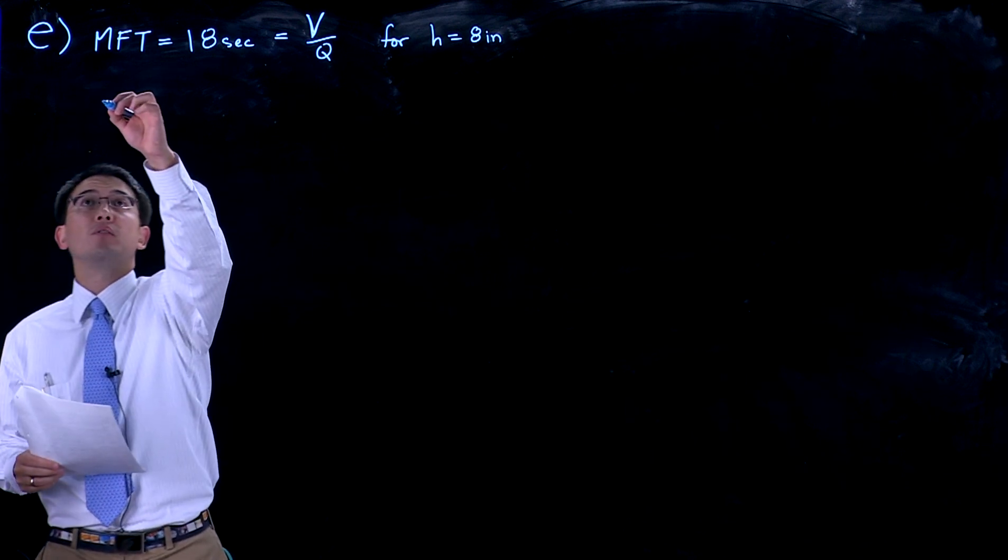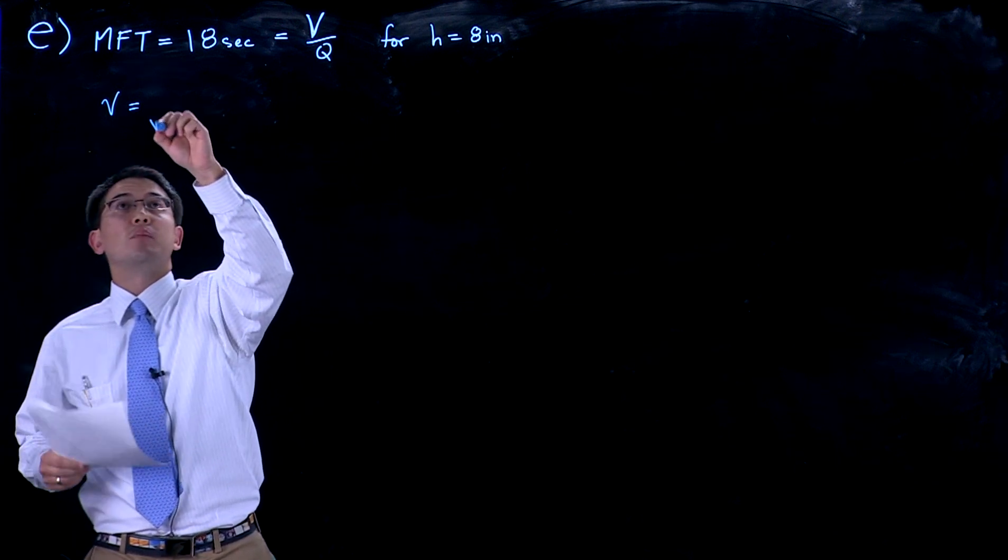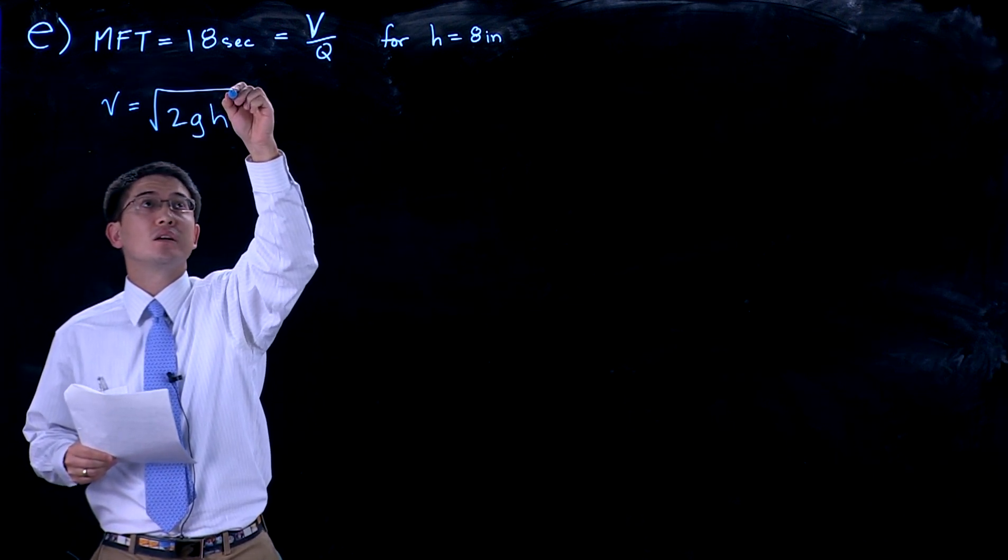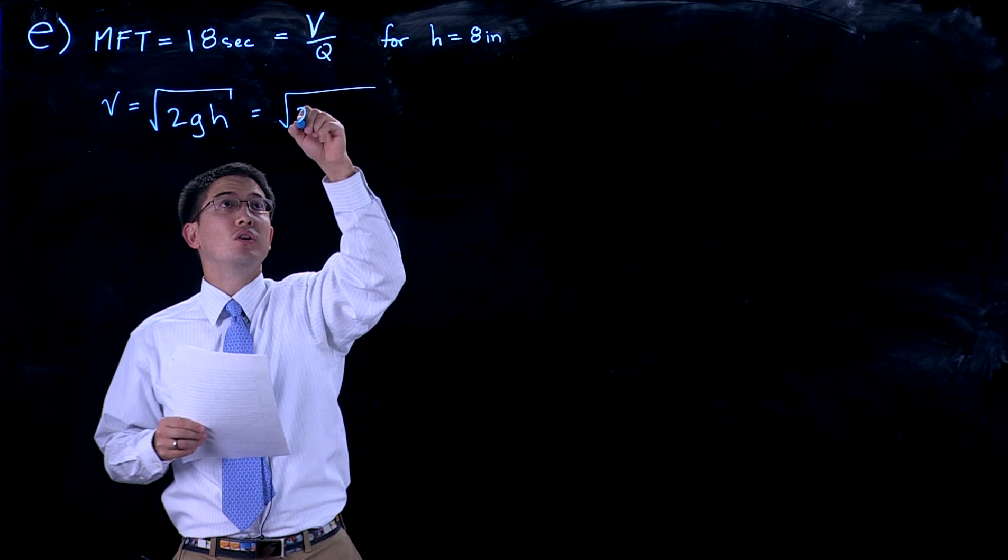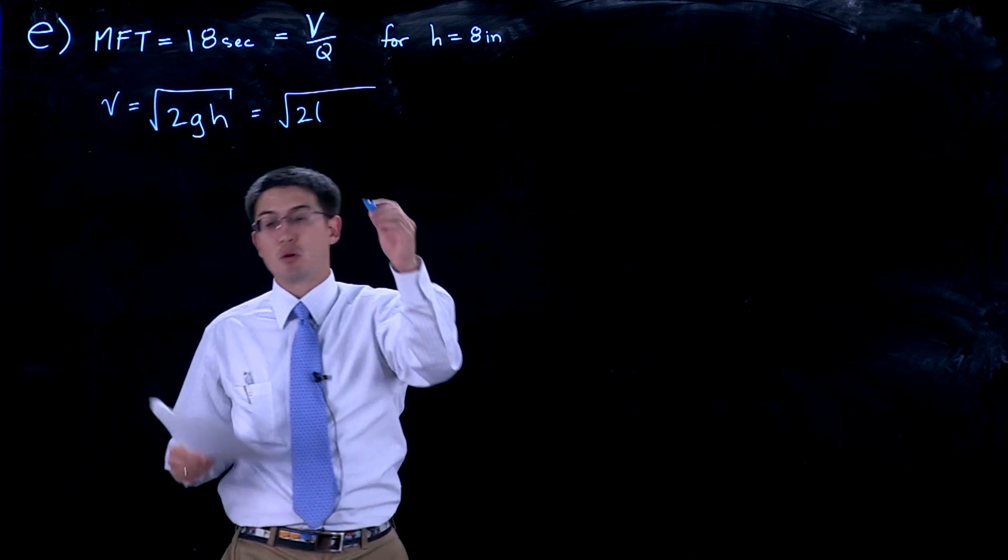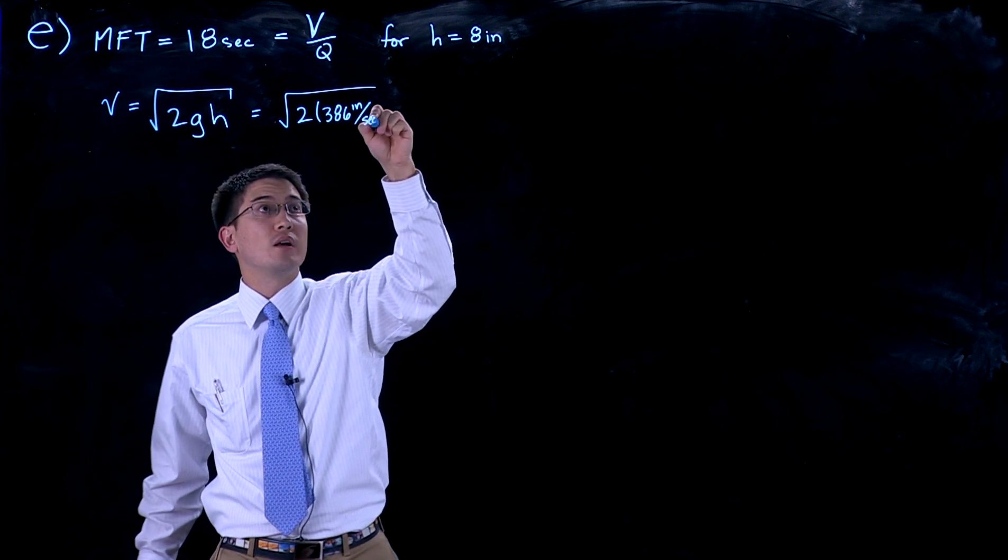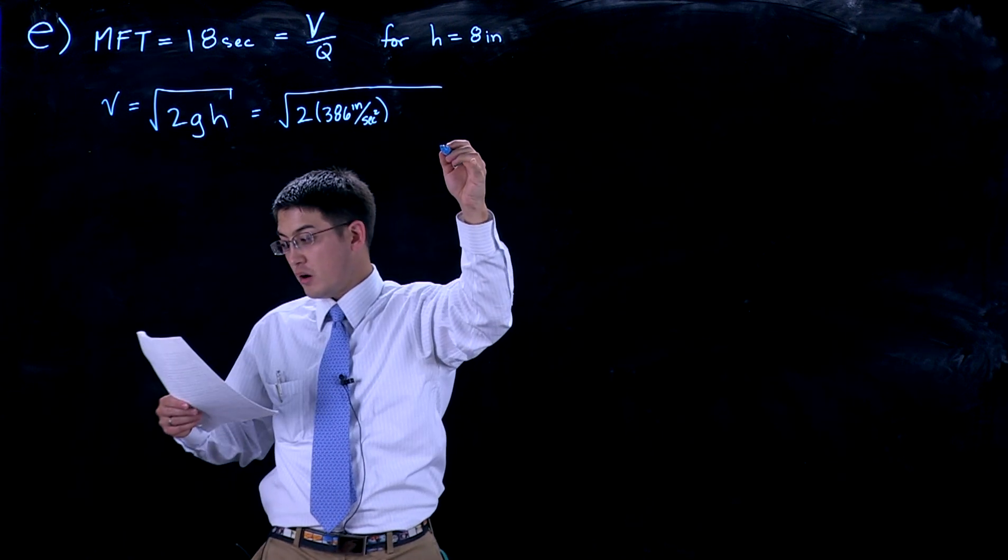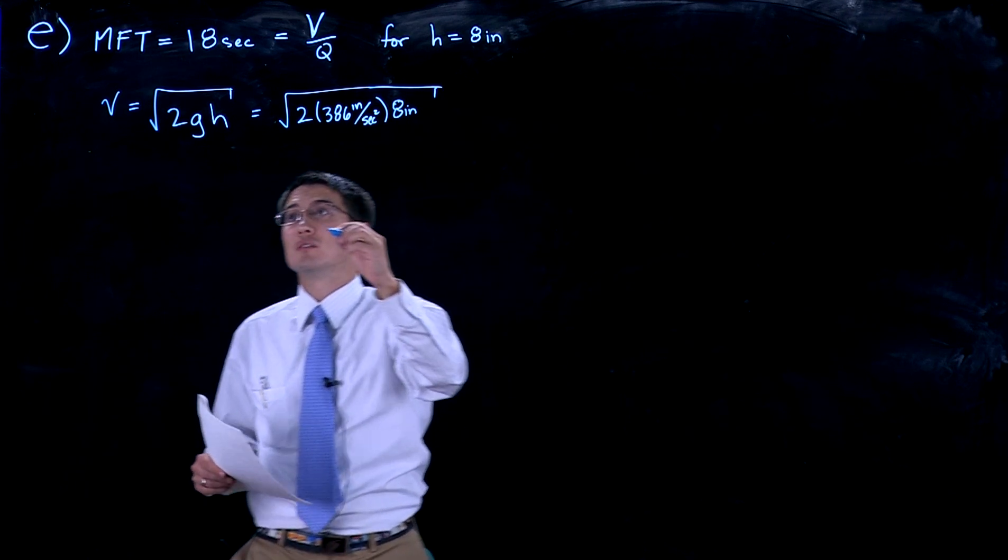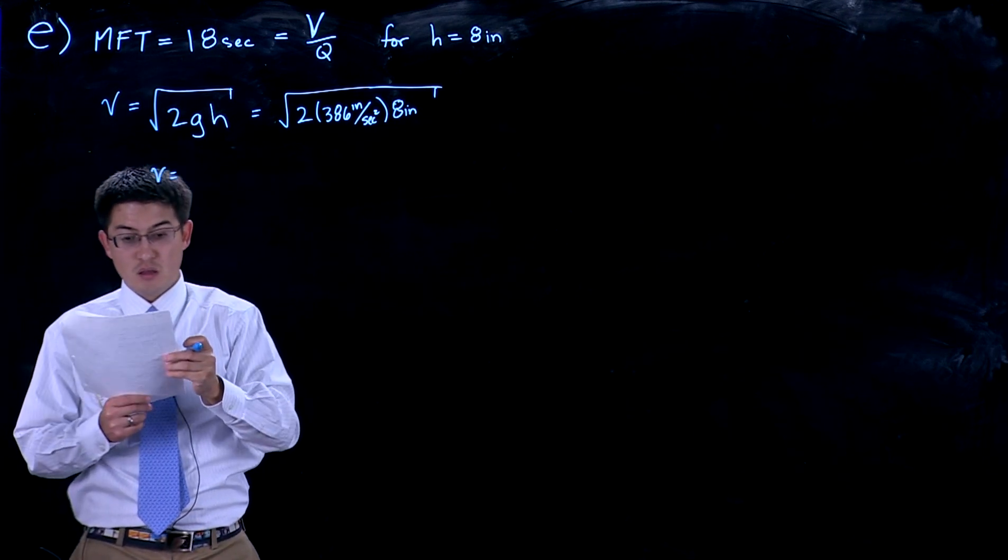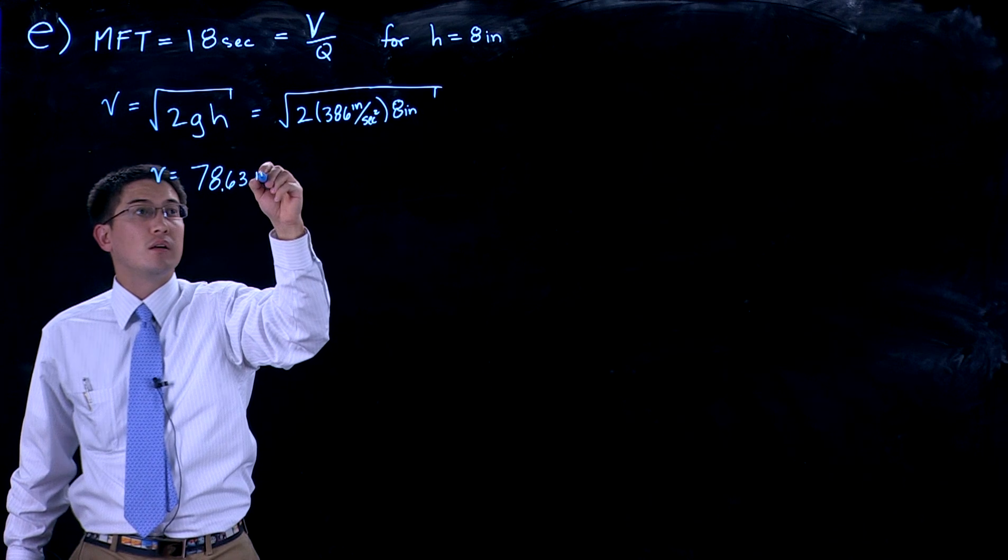We know from our previous equations that the velocity is going to come down to the square root of 2gh, where this is 2 times the acceleration due to gravity in inches per second, which is 386 inches per second squared, and we're going for a height of 8 inches down the sprue. This gives us a velocity of 78.63 inches per second.